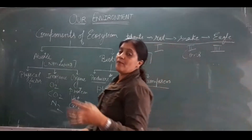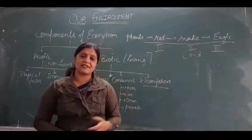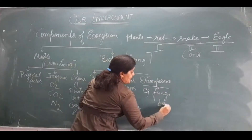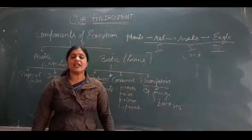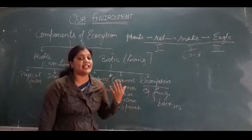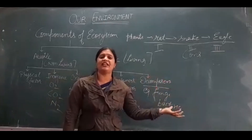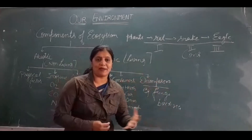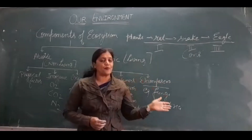Last is decomposers. Decomposers are organisms which eat dead and decaying plants and animals. These are always saprotrophic. Examples are fungi and bacteria. Decomposers help to clean our earth and environment — they are like a cleaning agent. When plants and animals die, they are completely decomposed and mix into the soil, increasing soil fertility.